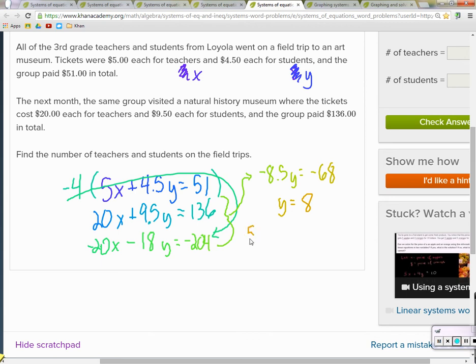Number two. I'm just going to write over that. Twenty times X, plus 9.5 times eight, equals 136. Three teachers. I trust your ability to solve for X in this equation. Yes. Okay.